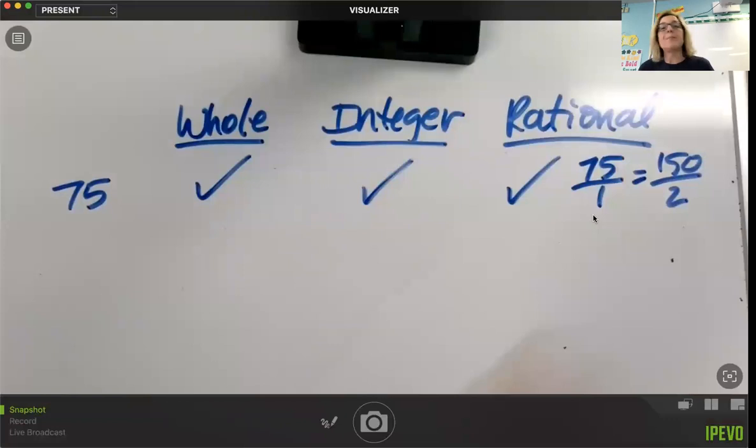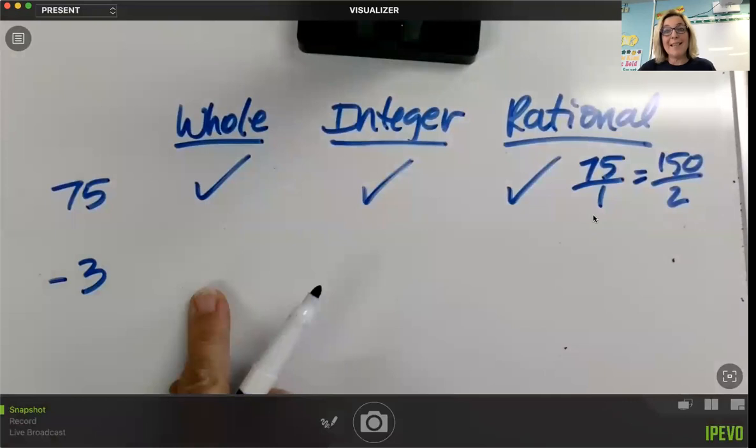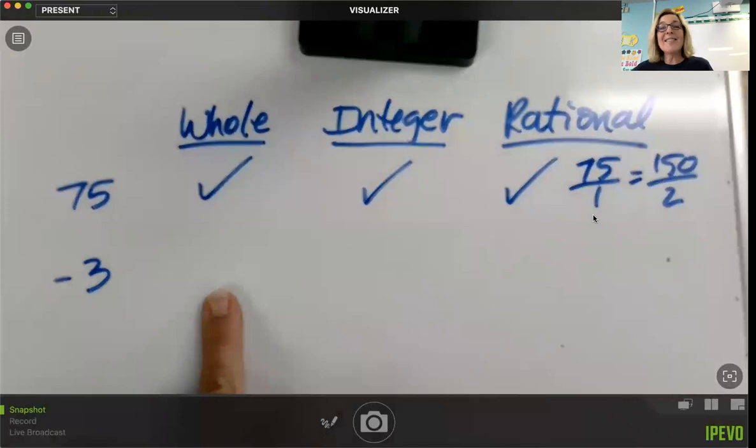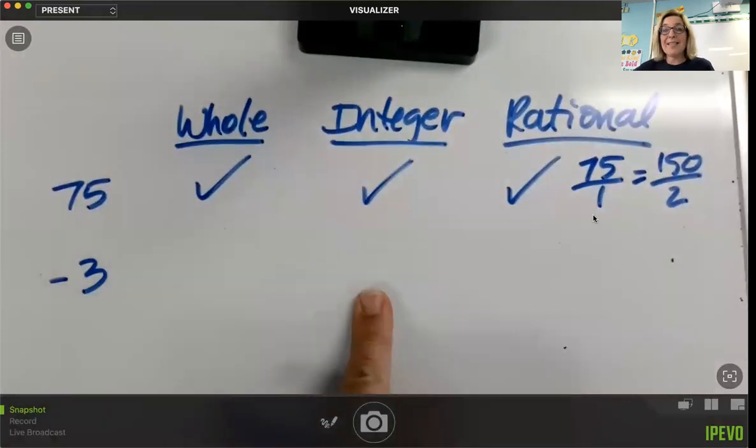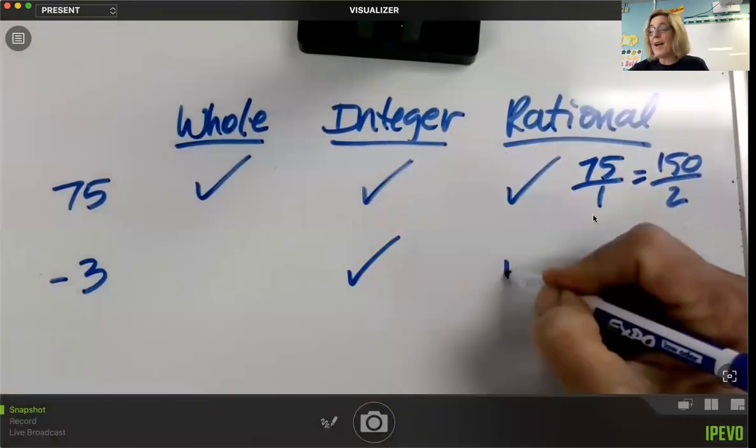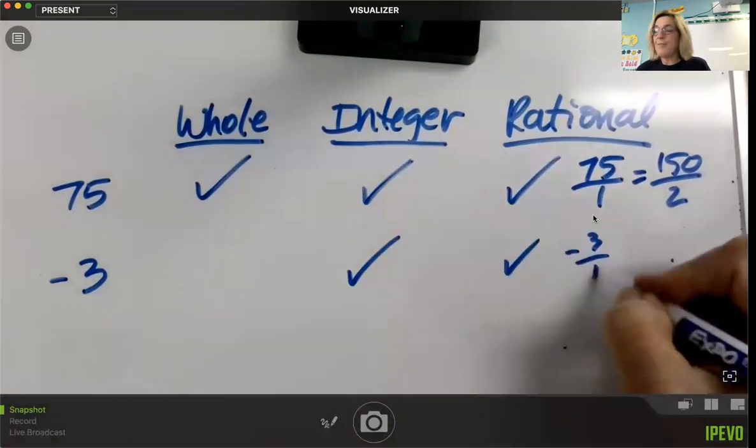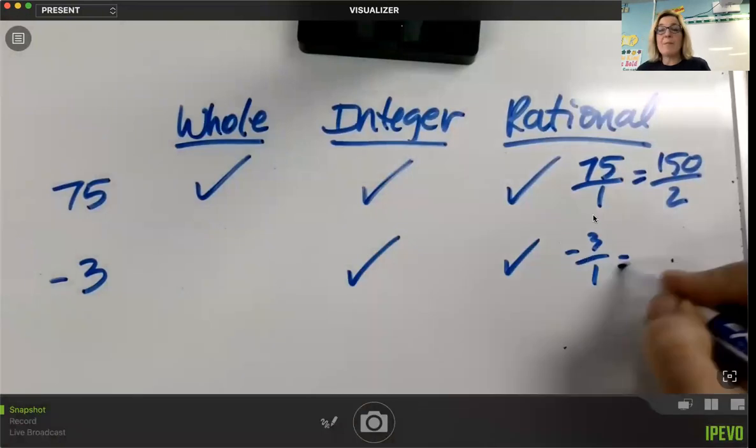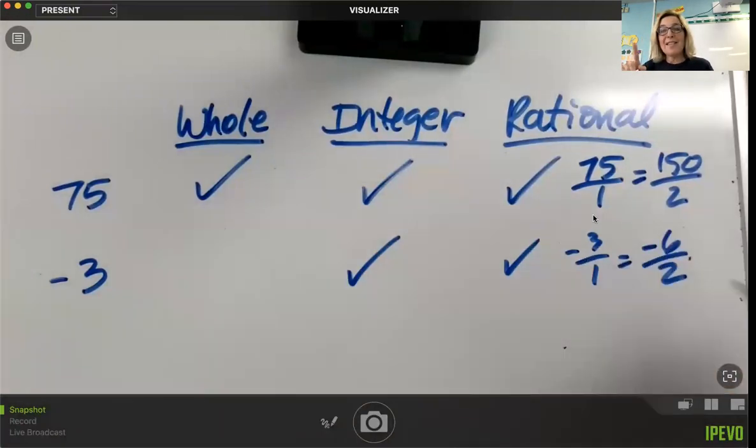So what about negative three? Is that considered a whole quantity? Well, no, it's not because it's negative. So we would not check off the first column, but it is the opposite of a whole number. Negative three is the opposite of three. So it is considered an integer. And it is a rational number because we could write it as a fraction in that form. We could also write it as negative six divided by two. Now you notice I said divided by. Fractions are division problems. So whenever you see a fraction bar, you could read it as a fraction, or you could read it as a division problem.